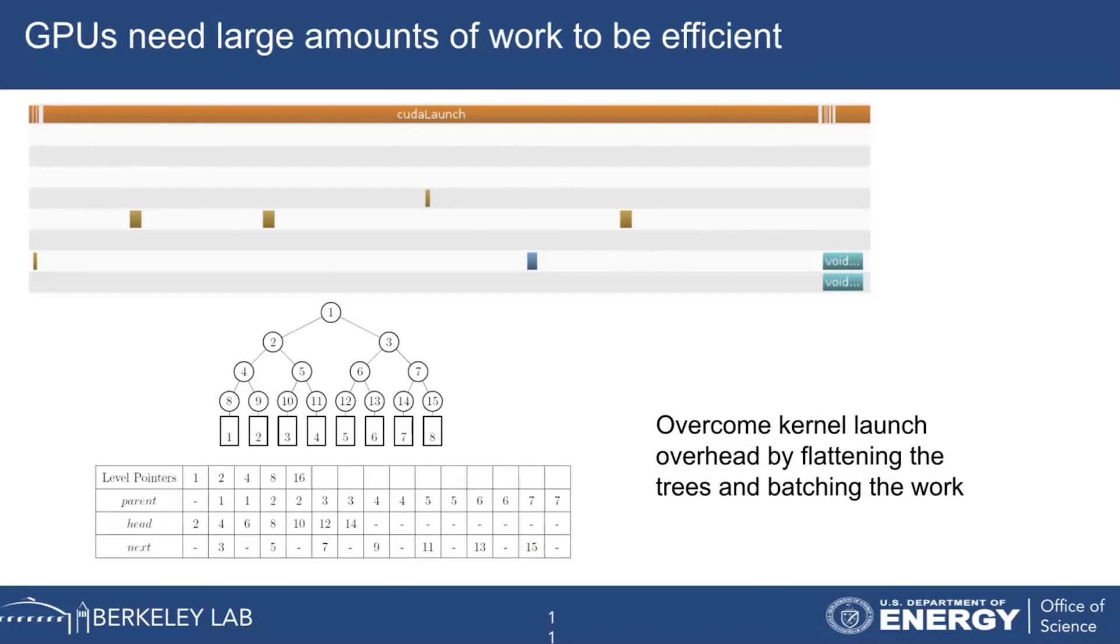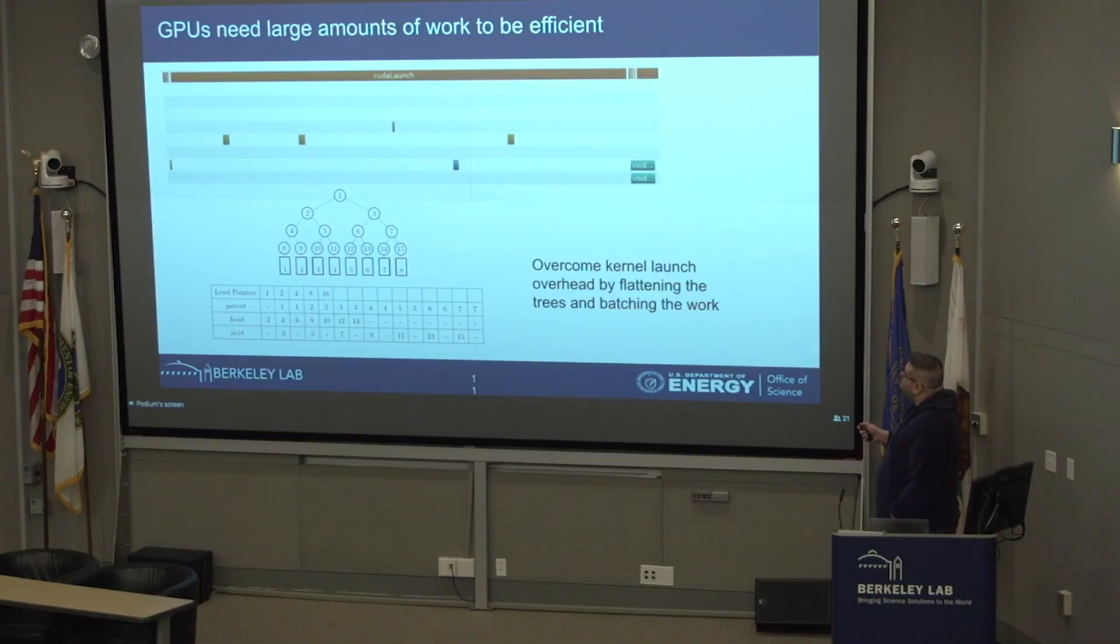If we try to pass these operations onto the GPU, then GPUs require large amounts of work to be able to process things efficiently. This is an example of a matrix-matrix multiplication using one of those k by k blocks, and you can see that this is how much time it took to launch the kernel, and this is the actual work. Unless we package the work in a more efficient manner, we're not going to be able to use the GPU efficiently.